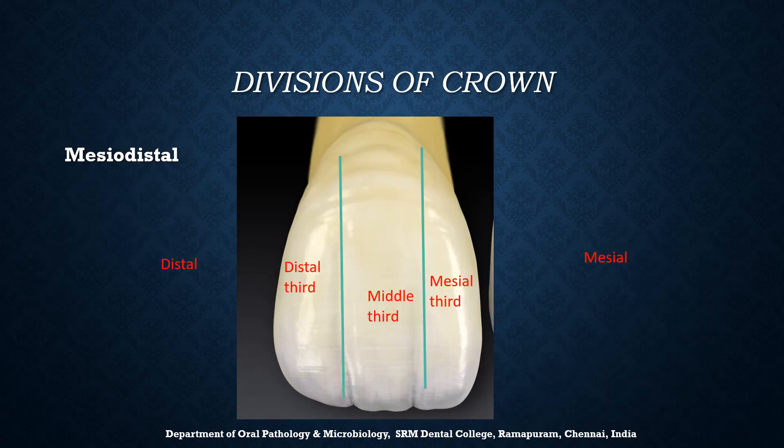For the purpose of description, the crowns and roots of teeth are divided into thirds, named according to their location. Here we have the labial surface of the maxillary central incisor. When viewing this labial surface from the mesiodistal direction, the crown of anterior teeth can be divided into three thirds: mesial third, middle third, and distal third.